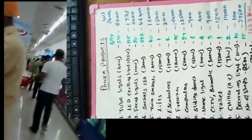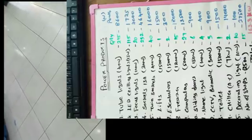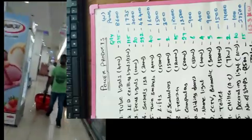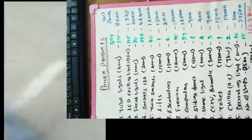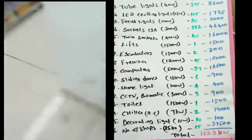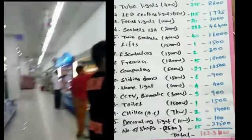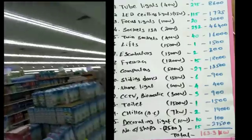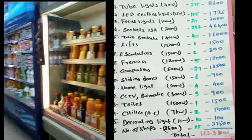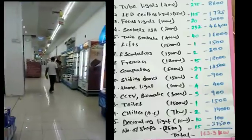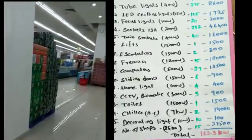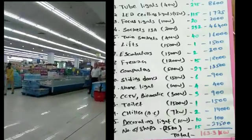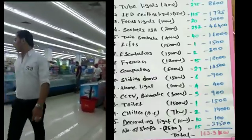In the front entrance, we have to go to the back entrance. It will have tube lights, a fridge, freezers, etc. We need to go to the back entrance. There are twin circuits and two screws, with many circuits and loads. This is the power calculation - it's a freezer.